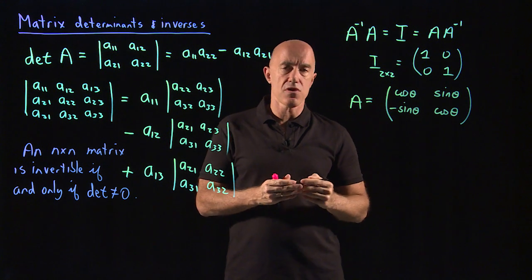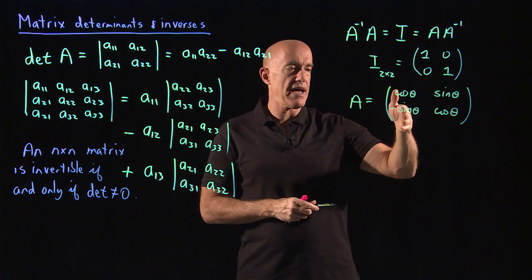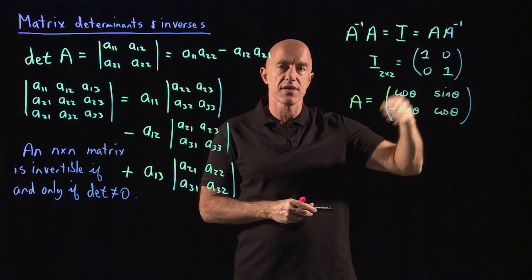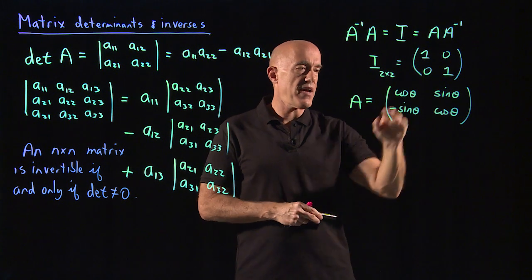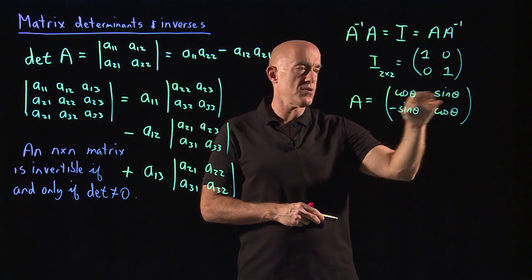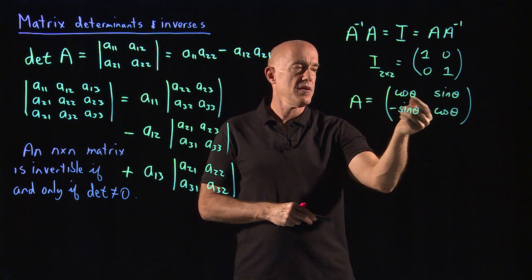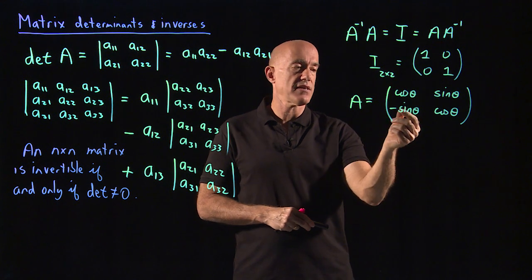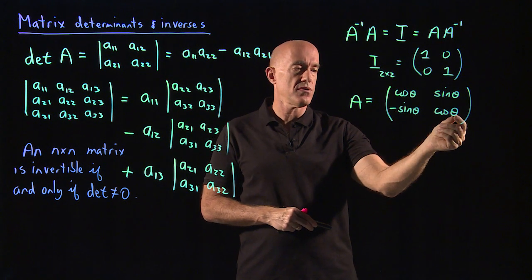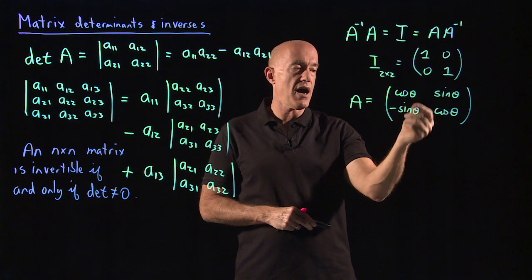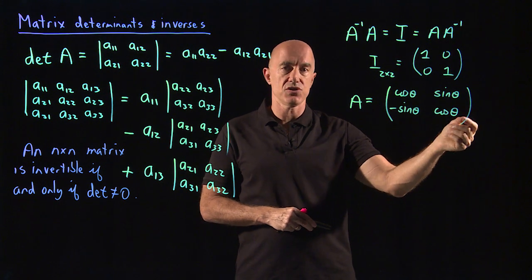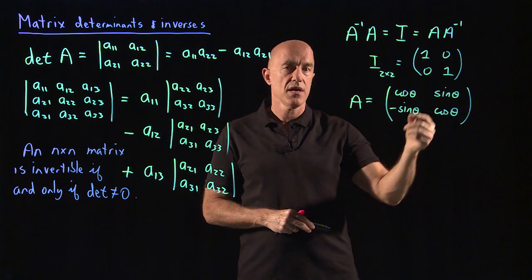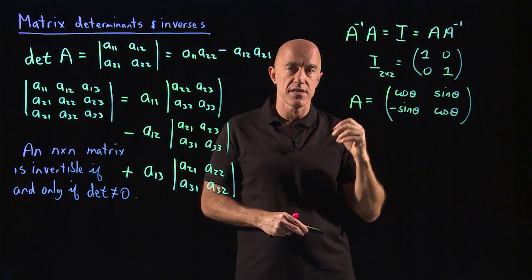This is called an orthogonal matrix. What it means is that this vector defined either by the first row or the first column, let's talk about the rows. The vector defined by the first row, which would be cosine theta i plus sine theta j, is orthogonal to the vector defined by the second row, which would be minus sine theta i plus cosine theta j. So that means the dot product of the vector formed by the first row with the vector formed by the second row is zero.